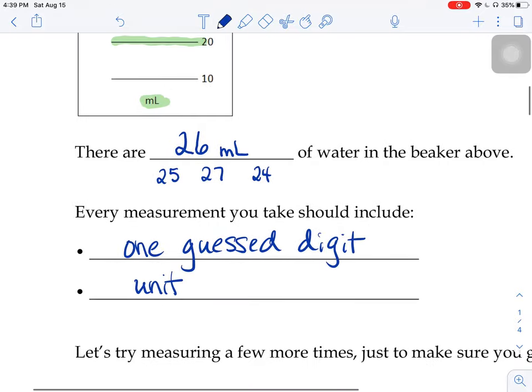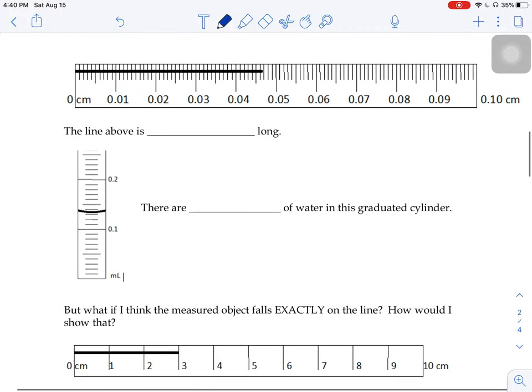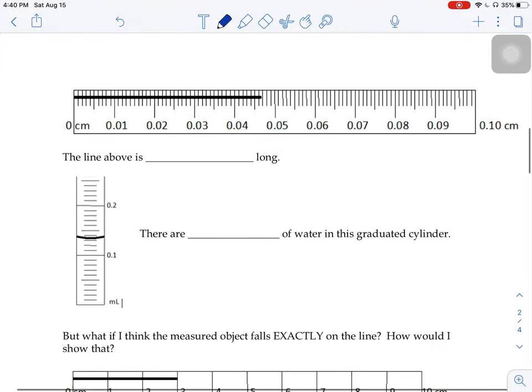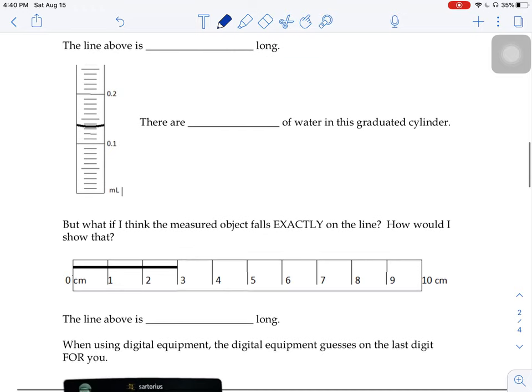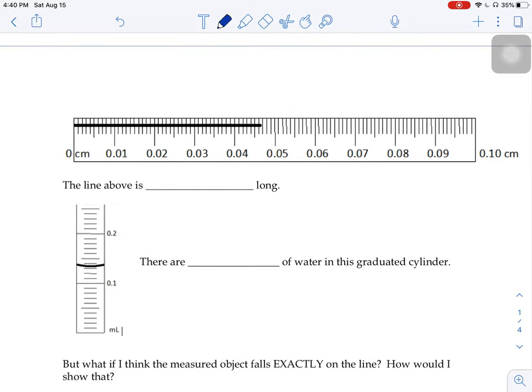So now that you have this idea down, hit the pause button. I'd like you to scroll to this next page, and you can see another ruler and a graduated cylinder. So try those two. Don't worry about this guy just yet. Just try those two, hit the pause button, write down what you think the answers are, and then unpause it and come back.